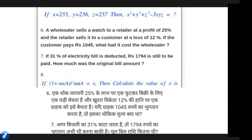We can see the next question here. A wholesaler sells a watch to a retailer at a profit of 25%, and the retailer sells it to a customer at a loss of 12%. If the customer pays rupees 1,045, what had it cost the wholesaler?